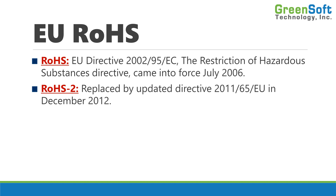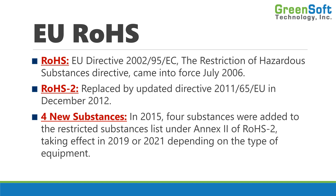This is known as the RoHS Recast, or RoHS 2. We are currently in RoHS 2. In 2015, four substances were added to the EU RoHS Restricted Substances list, taking effect in 2019 or 2021, depending on the type of equipment.